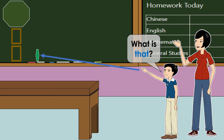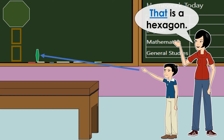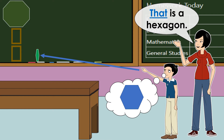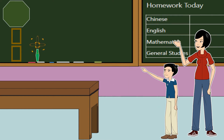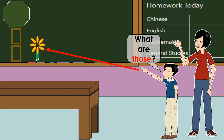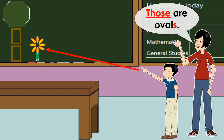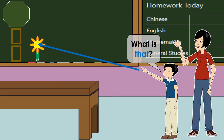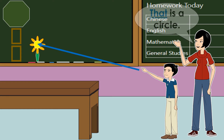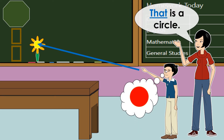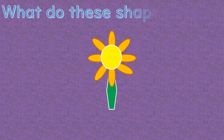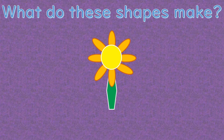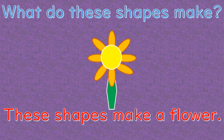What is that? That is a hexagon. What are those? Those are ovals. What is that? That is a circle. What do these shapes make? These shapes make a flower.